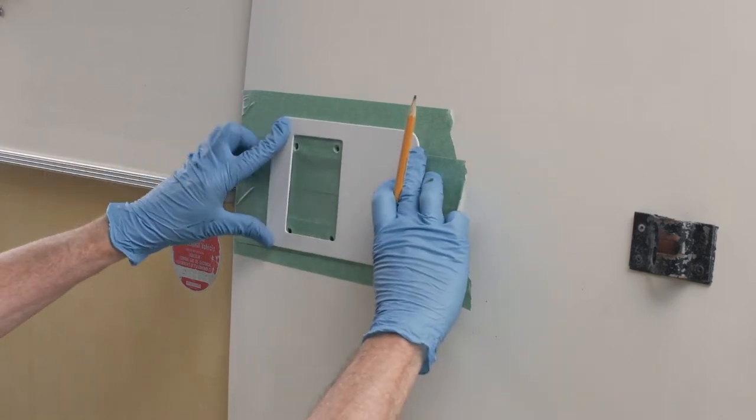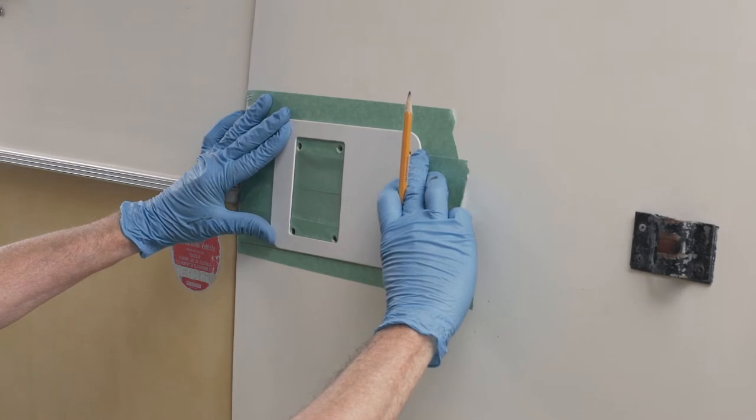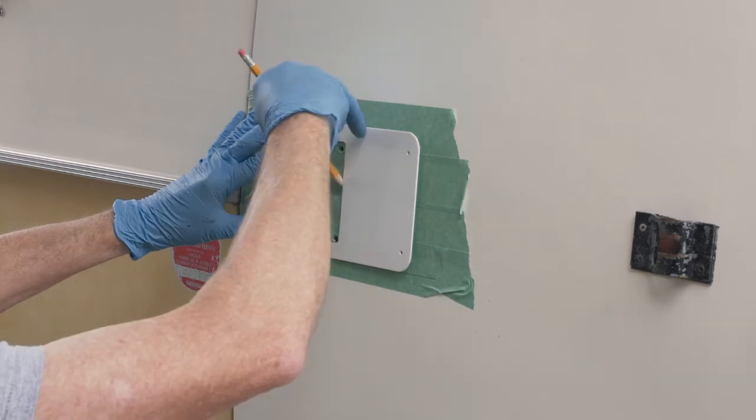Place the adapter plate on the outside of the door and align the bottom of the plate with the lower line. Trace around the inside opening to mark the lock set cutout.